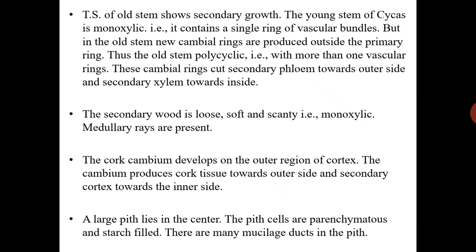In the young stem it is monoxylic with a single ring of vascular bundles; in the old stem it is polycyclic with more than one vascular ring. These cambium rings cut secondary phloem towards the outer side and secondary xylem towards the inside. The secondary wood is loose, soft, and scanty — it is manoxylic. Medullary rays are present. The cork cambium develops in the outer region of the cortex and produces cork tissue towards the outer side and secondary cortex towards the inner side.